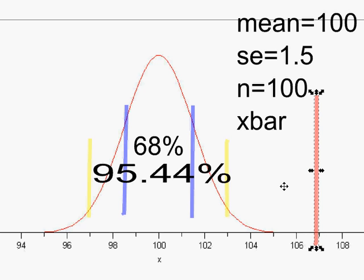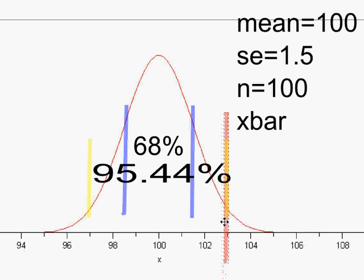Let's talk more about why you can't calculate the probability that your theory is true given some estimate, but you can calculate the probability of getting an estimate like you did assuming the theory is true. I've cleaned up the graph a bit. Suppose your estimate was exactly 103.